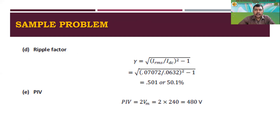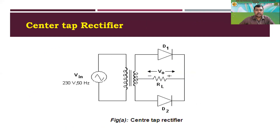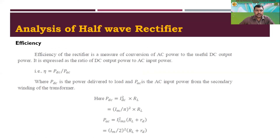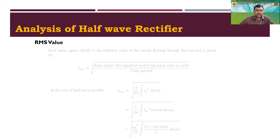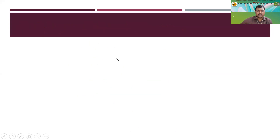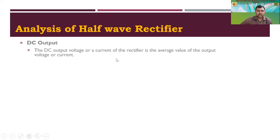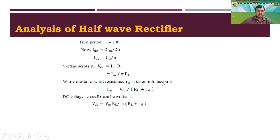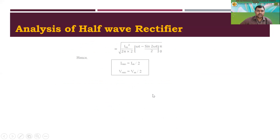With this, we have completed the unit on full wave rectifier analysis. If you have any queries, you can ask. Today we studied this full wave rectifier circuit, and previously we covered the half wave rectifier circuit where we derived formulas for IM, IDC, and VDC. The same analysis is to be repeated for the full wave bridge rectifier.